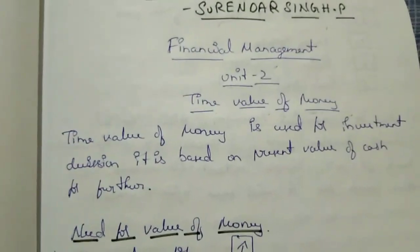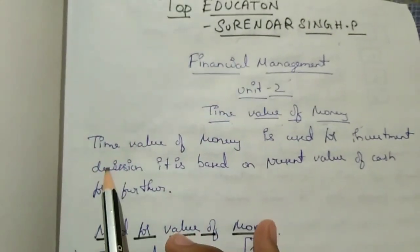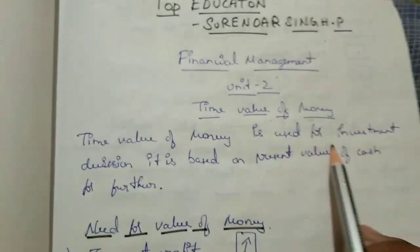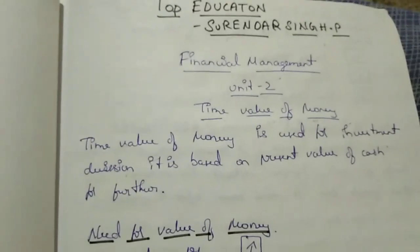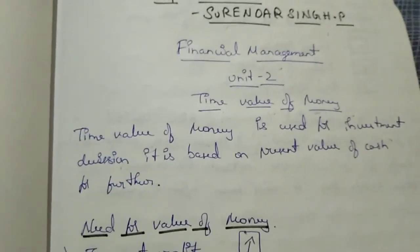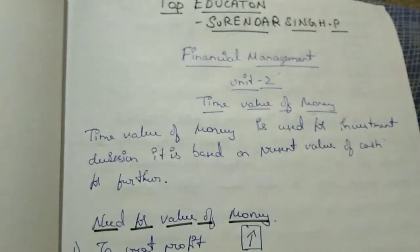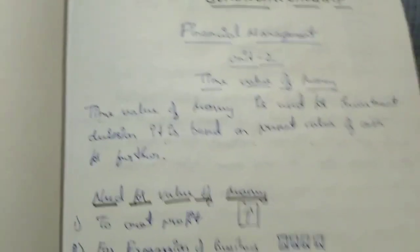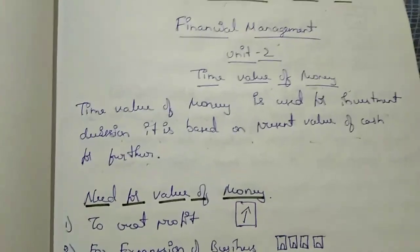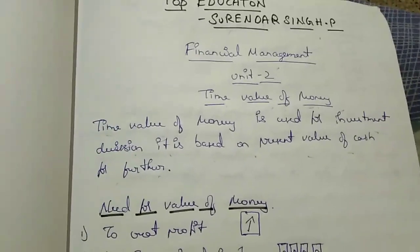What is time value of money? Let's know quickly. Time value of money is used for investment decision. It is very useful for investment decision. If you want to invest in loans, debentures, or shares, you have to go through time value of money. It is based on the present value of cash for the future, based on the present value of what you are investing now and what you will get after five years.